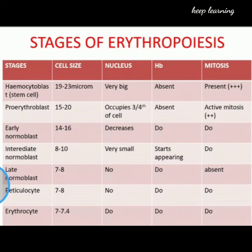In the reticulocyte, the cell is 7 to 8 microns, there is no nucleus, and hemoglobin is present. In the matured RBC, the cell size is 7 to 7.4 microns, with no nucleus and hemoglobin present. These are the changes during the stages of erythropoiesis.